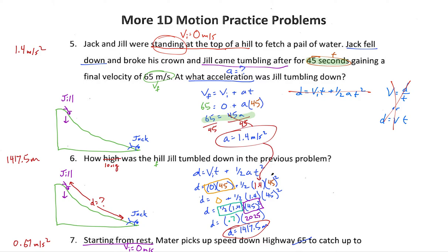A very common problem on this practice problem is not knowing the acceleration, but we actually do — it came from the previous problem. We solved for 1.4 meters per second squared, so it's still 1.4 meters per second squared because it's a continuation. If you got that wrong, it's going to change your answer here, which is why it's really important to check over your work, especially when dealing with a multi-part problem.